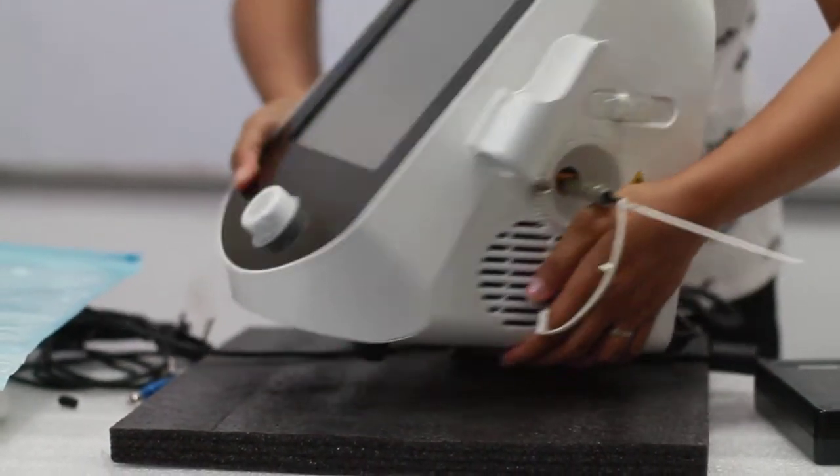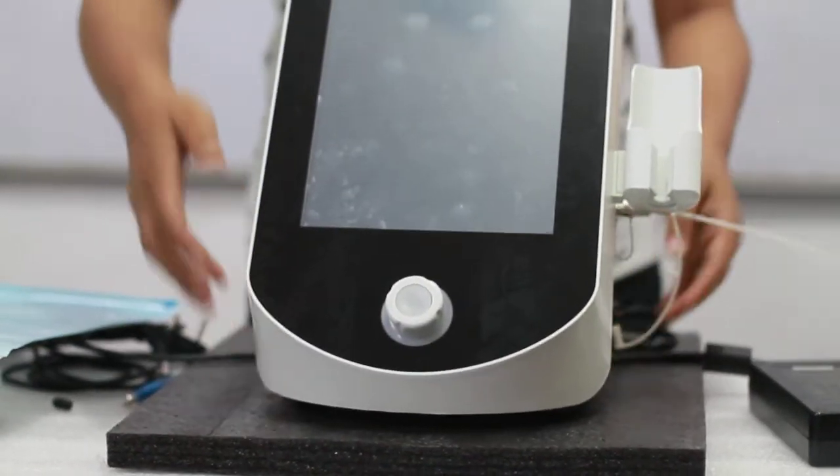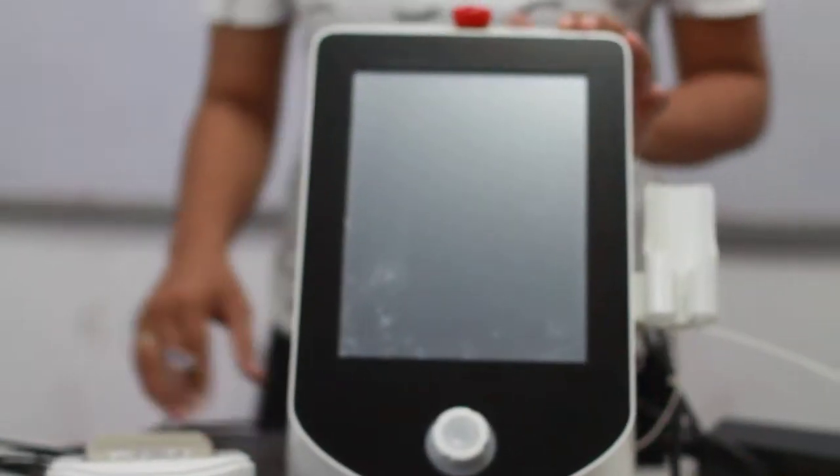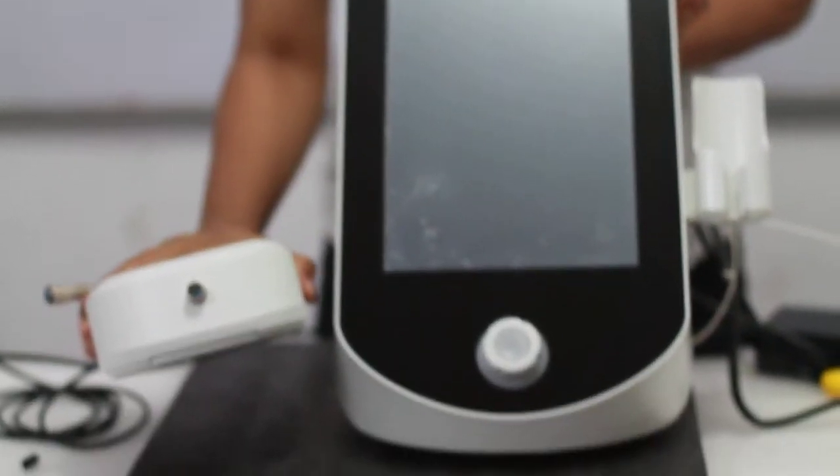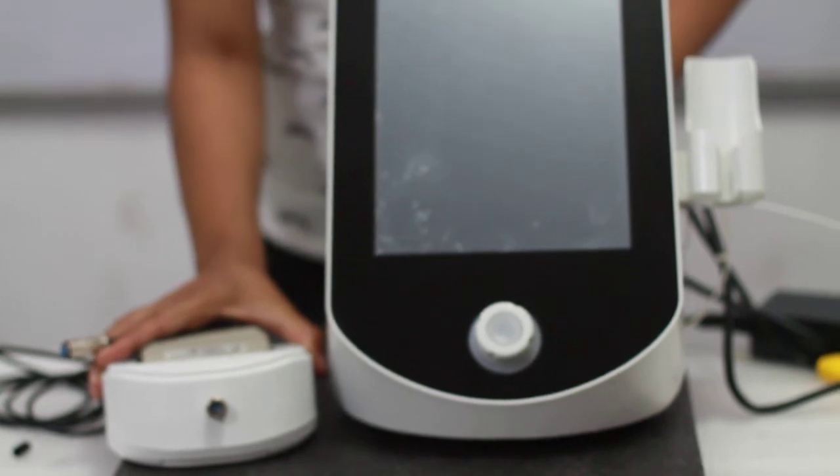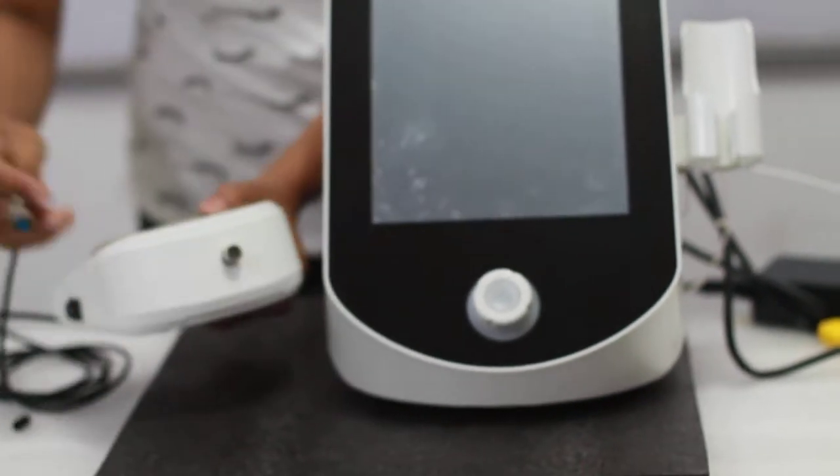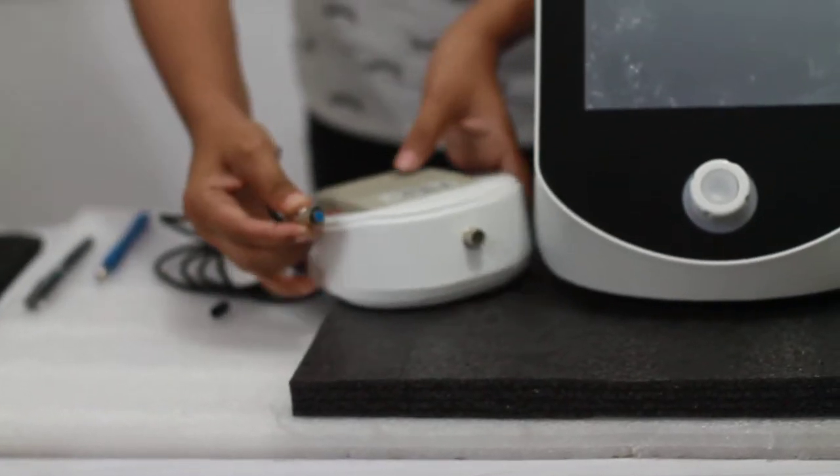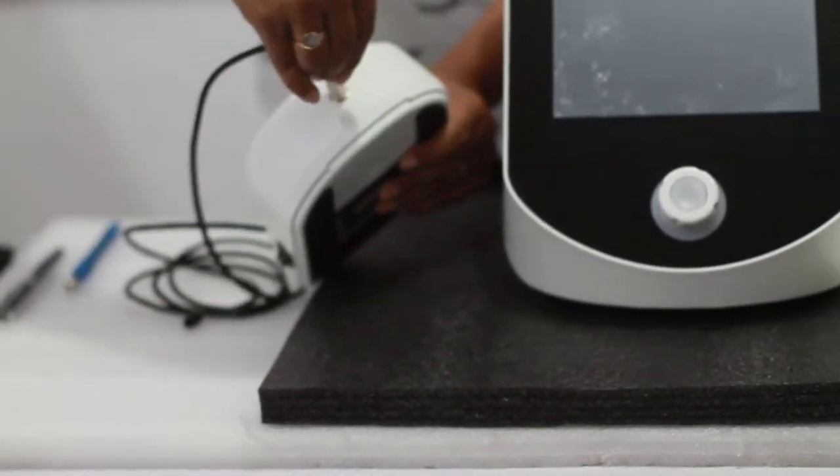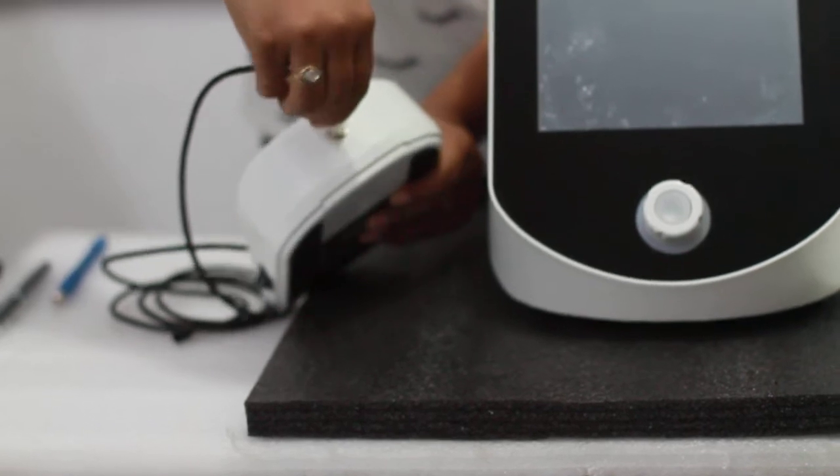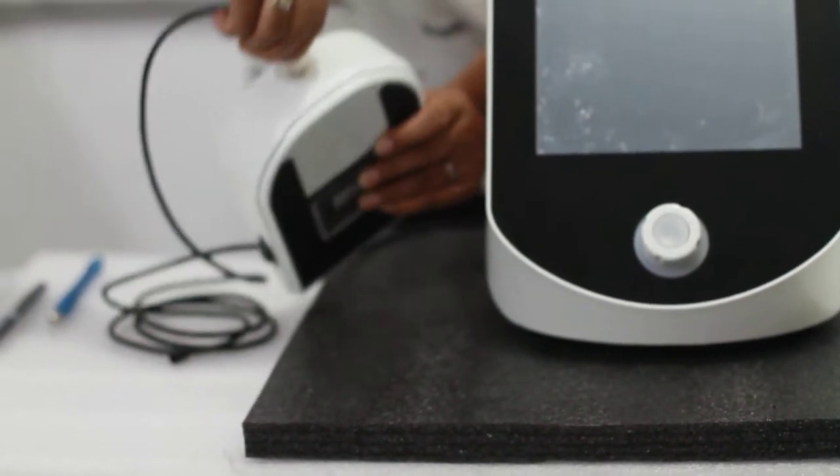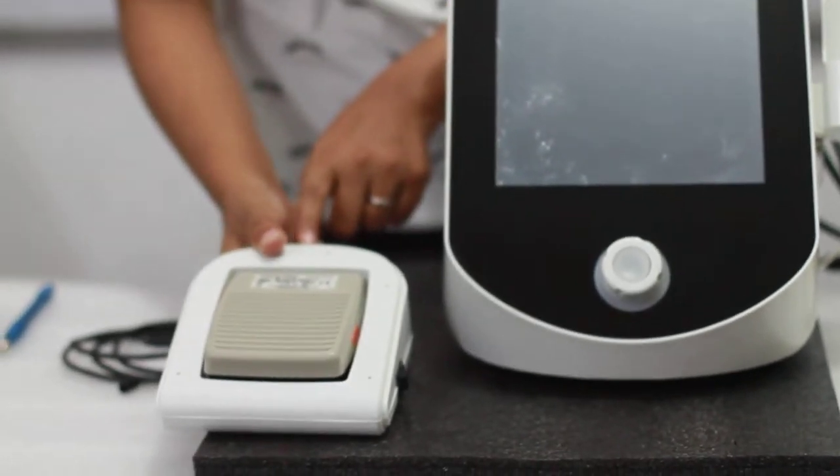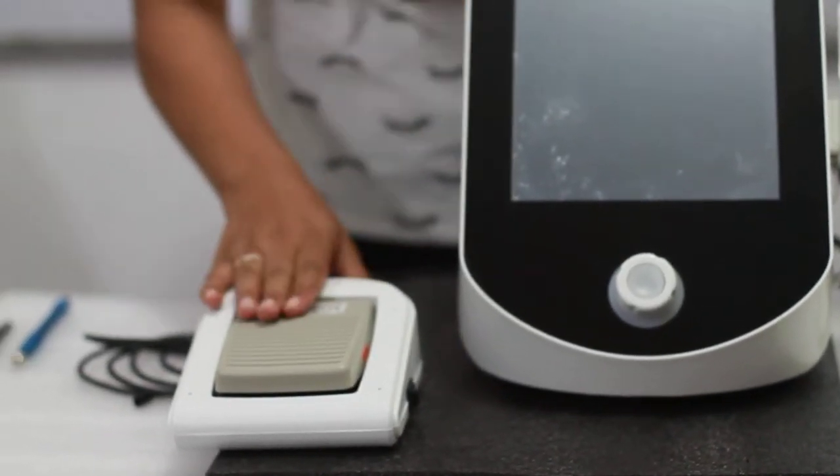Once this is connected, now we will check the machine. So this is your foot pedal. The other connector is already connected in the machine. Now what we have to do is, can you see this? Pull it backward. And once this sound comes, this click sound, that means your foot pedal is now connected.